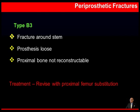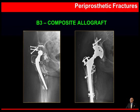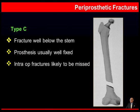Type B3 periprosthetic fractures occur around the stem of the implant where the prosthesis is loose and the proximal femoral bone is not only deficient but not reconstructable. The treatment is revision with substitution of the proximal femoral bone. An example: a patient with a type B3 fracture was treated with a large revision ZMR-type stem and the proximal bone was reconstructed using allograft. A 6-year follow-up shows an excellent outcome. Another B3 case used a composite allograft in the proximal femur to reconstruct the bone defect.